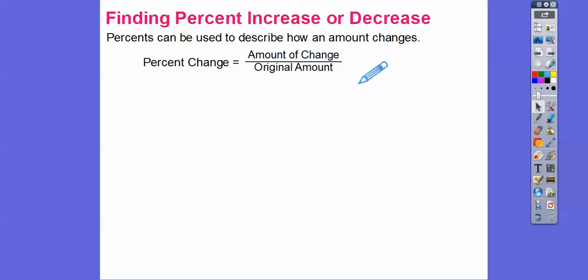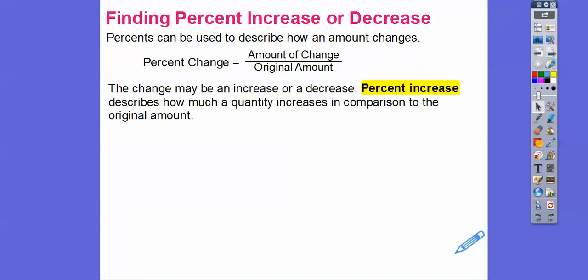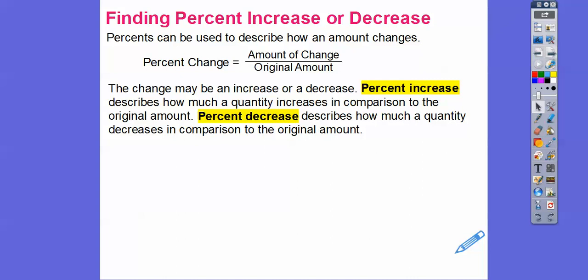And then it'll give you a decimal. Then we move it over two places to the right to change it to a percent. So the change may be an increase or a decrease. The percent increase describes how much a quantity increases in comparison to the original amount. And a percent decrease describes how much a quantity decreases in comparison to the original amount.